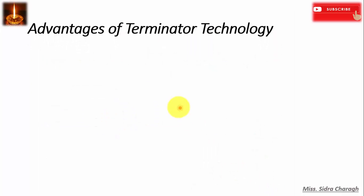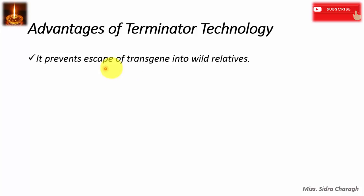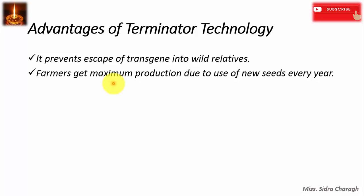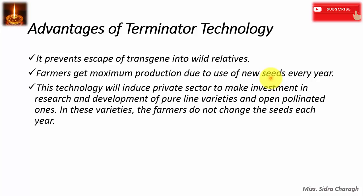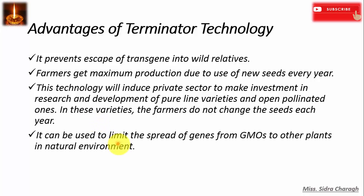Now let's see the advantages of terminator technology. It prevents the escape of transgenes into wild relatives, and farmers can get maximum production due to use of new seed every year. This technology will induce the private sector to make investment in research and development of pure line and open-pollinated varieties. In this variety, the farmer does not need to change the seed each year, and it can be used to limit the spread of genes from GMOs to other plants in the natural environment.